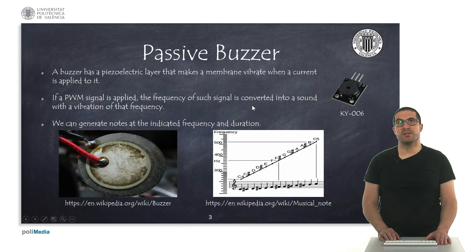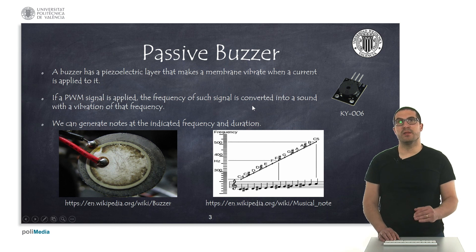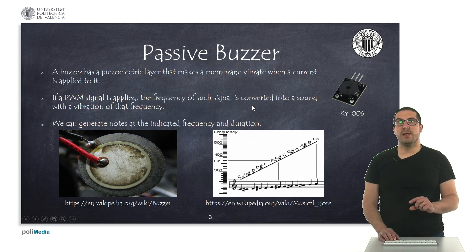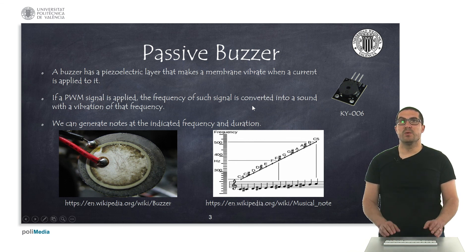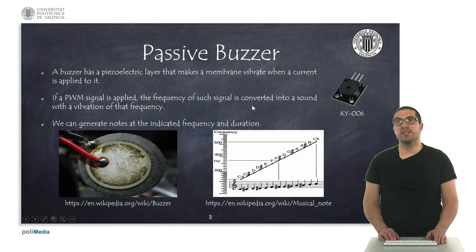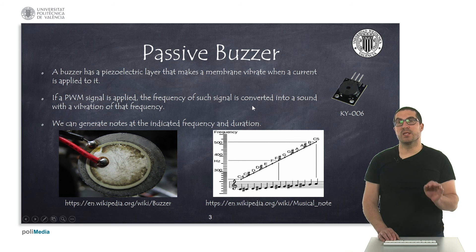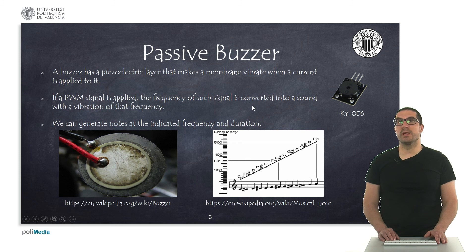Let's start with the passive buzzer. It's a special kind of material — a piezoelectric layer that makes the membrane vibrate when we apply a current to it. So if we apply a PWM signal with a specific frequency, this generates a vibration which is converted to a sound at that specific frequency. With this kind of device we can easily generate tones or notes with a specific frequency and duration. Here you can also see the KY006, a module typically used in many of our projects for generating sound.